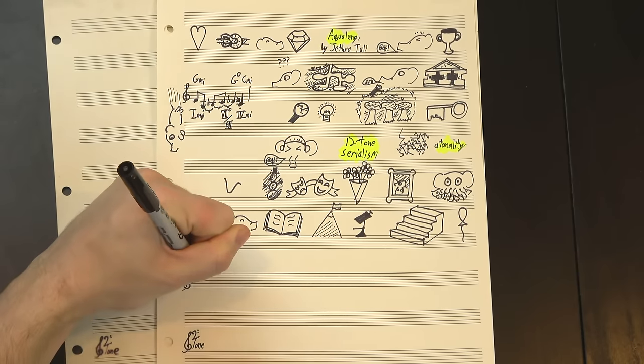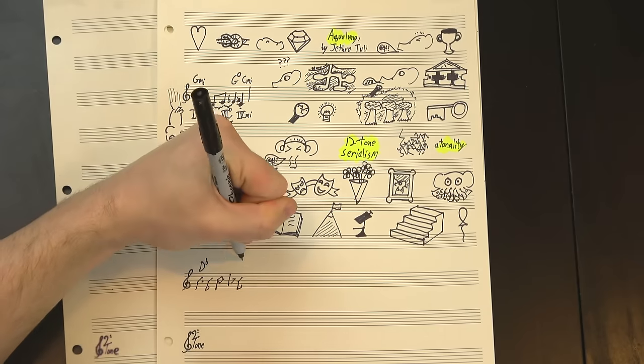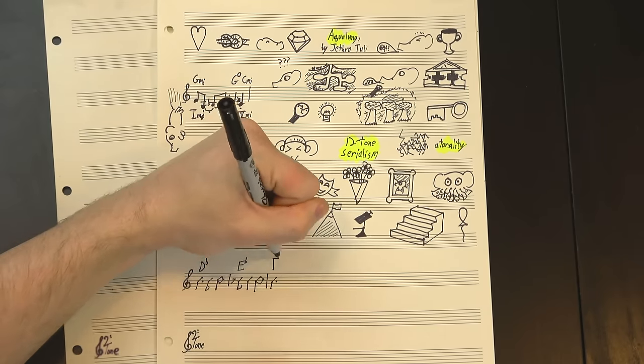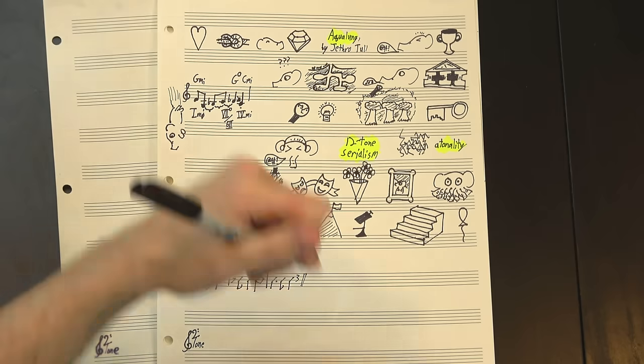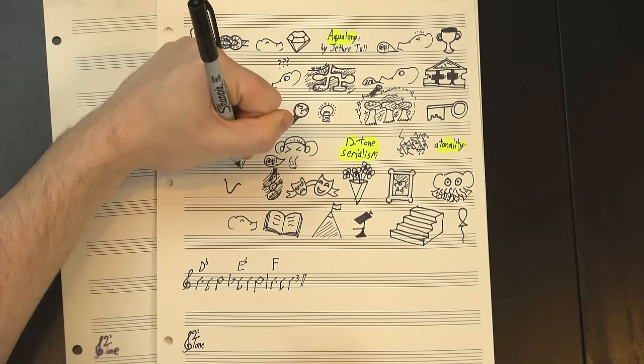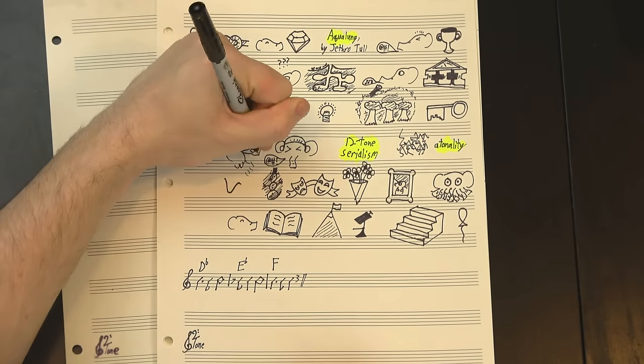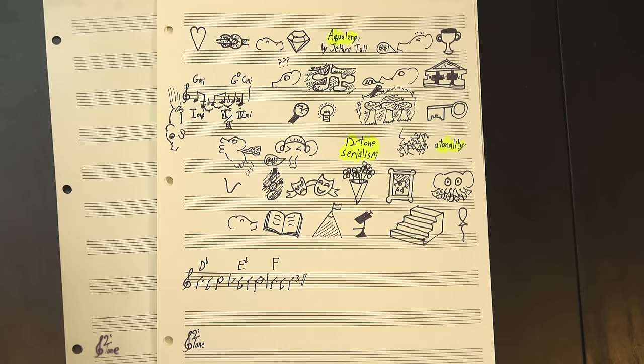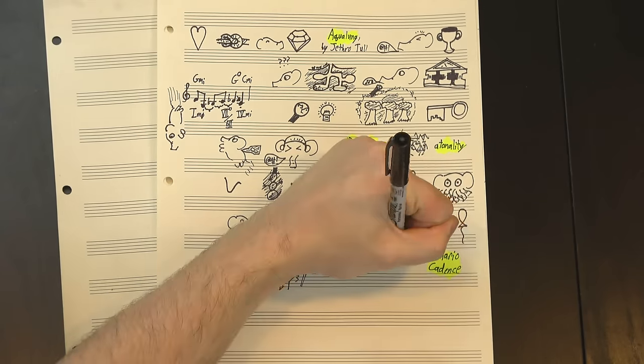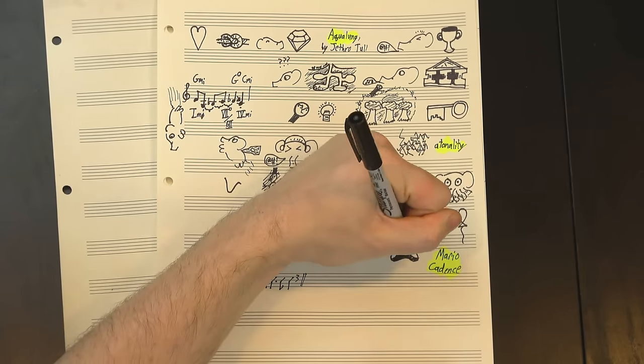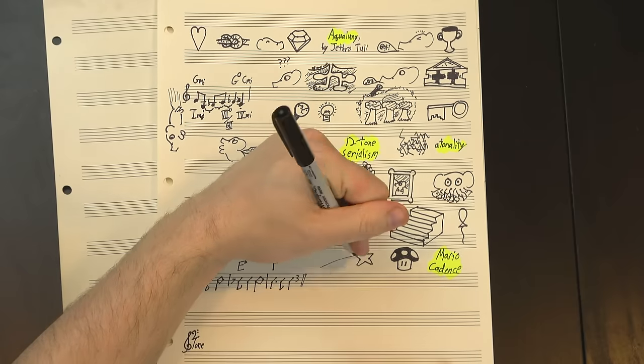Anyway, then the chords come in. Here we have three major triads in an ascending whole step line, which tends to sound pretty triumphant. It's reminiscent of what my friend 8-Bit Music Theory might call the Mario cadence, because a similar progression is used at the end of many levels in the Super Mario games to mark your success.